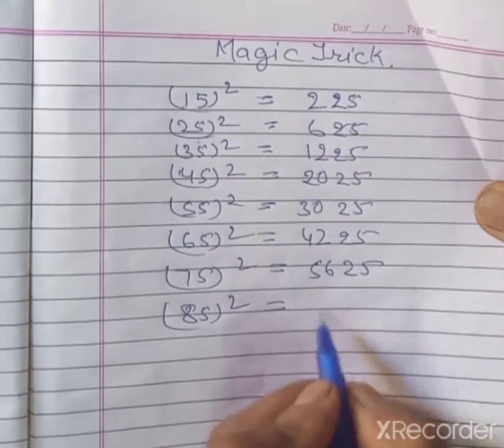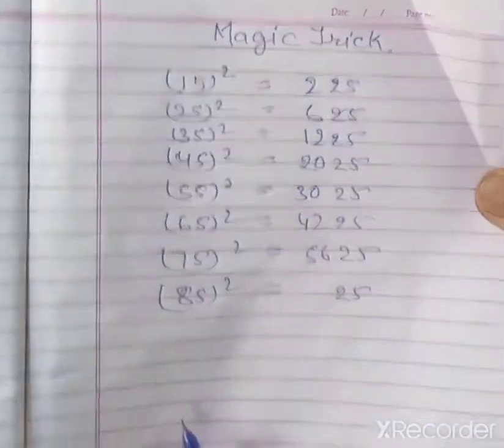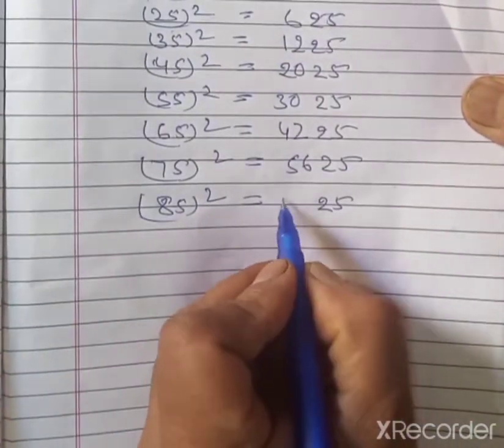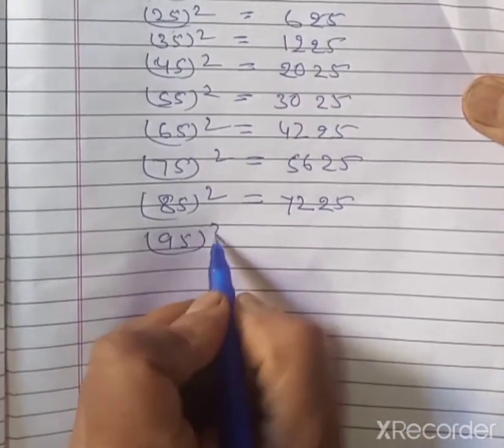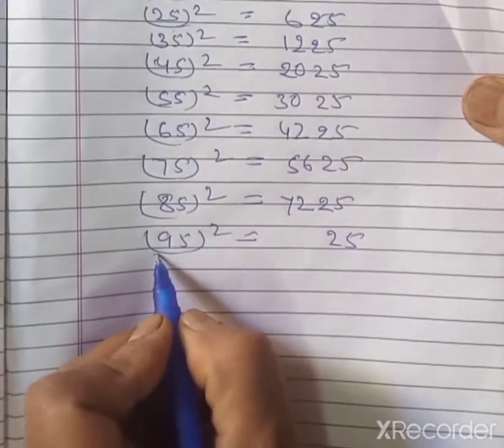For 85 squared, we write 25 and 8 times 9 equals 72, giving 7225. For 95 squared, we write 25 and 9 times 10 equals 90, giving 9025.